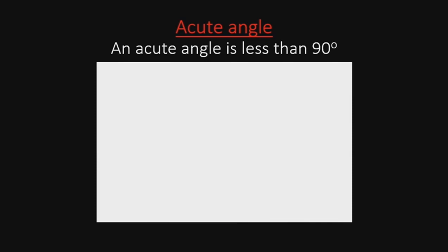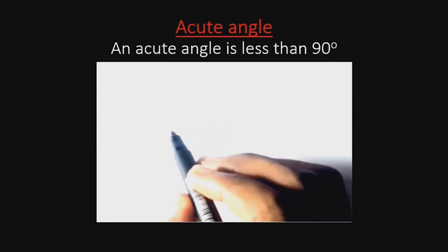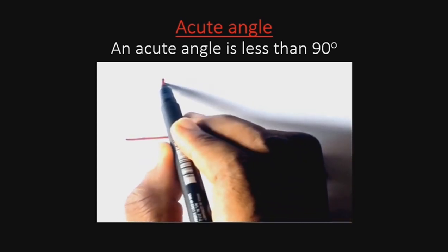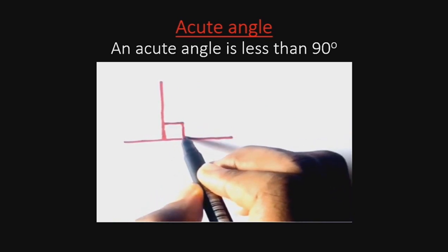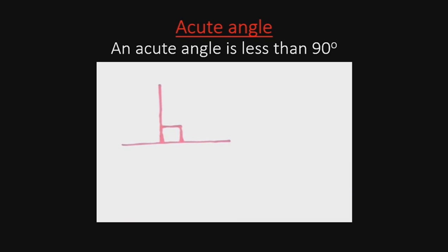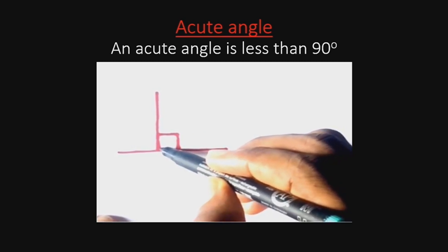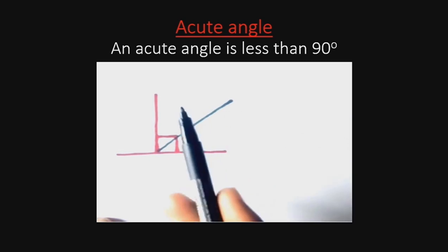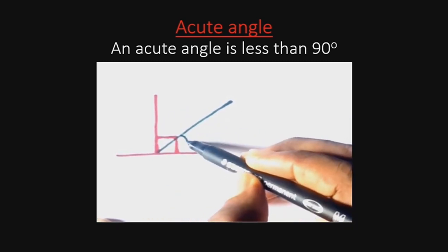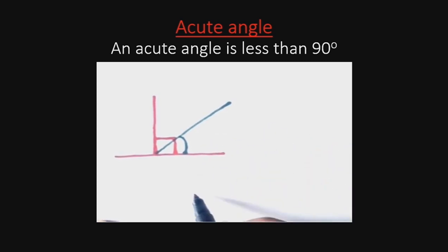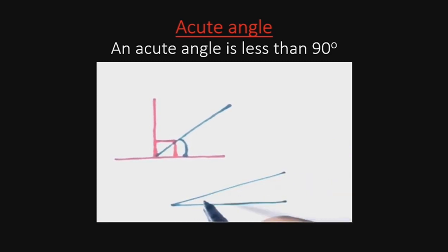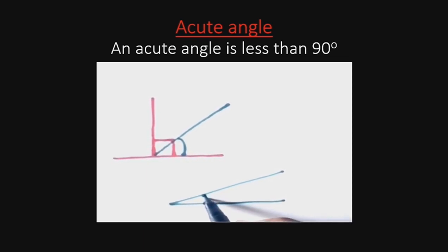The next angle we will be considering is an acute angle. An acute angle is an angle less than 90 degrees. It means that it could come anywhere, as long as it is not up to 90 degrees. So, an acute angle is an angle that is less than 90 degrees, and we can redraw an acute angle to show this.